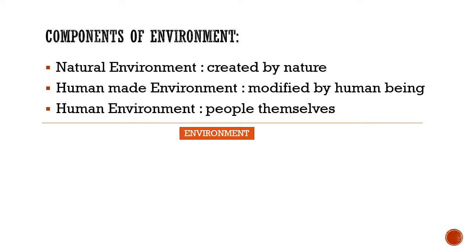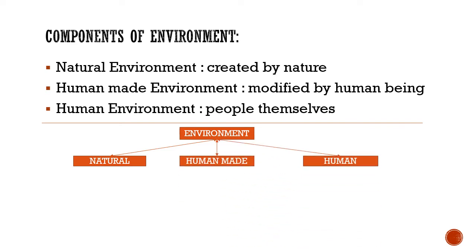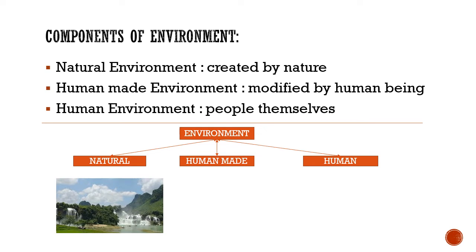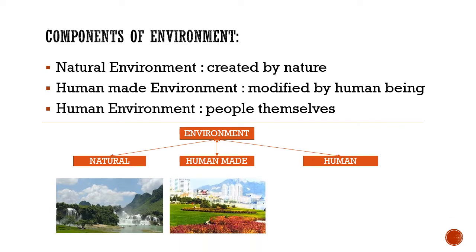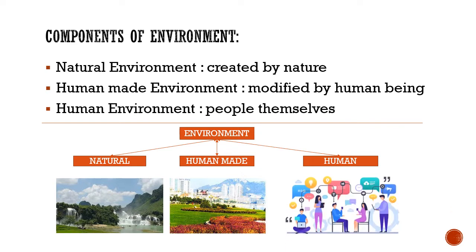We can understand it with the help of examples — natural, human-made, and human environment. Natural: whatever exists naturally. Human-made: as people can't survive completely in nature, they bring some changes in nature to make their life comfortable. And human beings themselves form the third component.